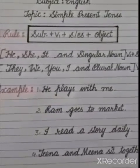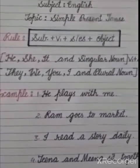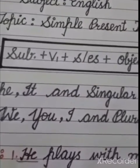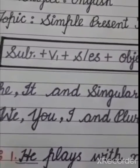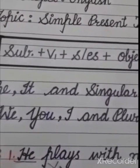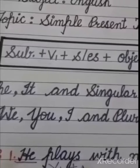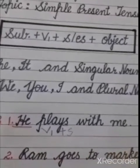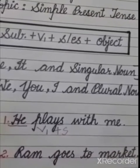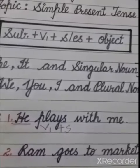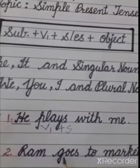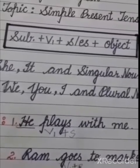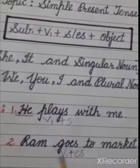I will explain with some examples. Our first example is: he plays with me. Our subject is he, and with he, we use the first form of the verb plus S. The first form of the verb is play, and we have added S to it because our subject is he. Second sentence: Ram goes to market. Ram is our singular noun because this is the name of one person, and with this we have used the first form of the verb plus ES — go becomes goes.